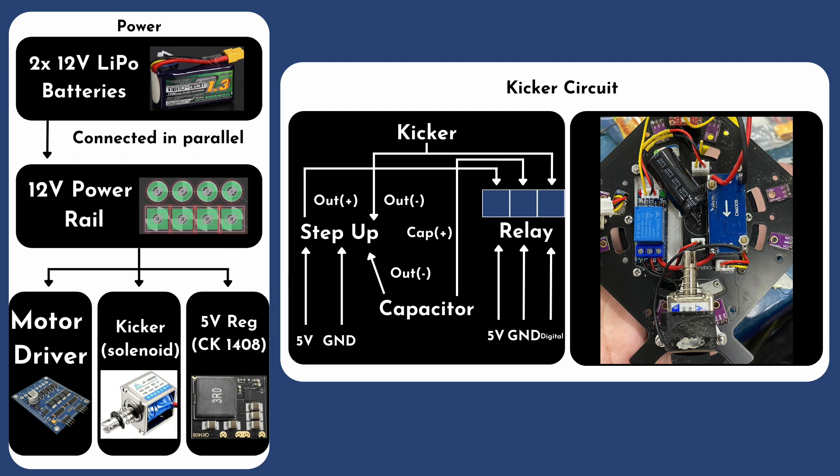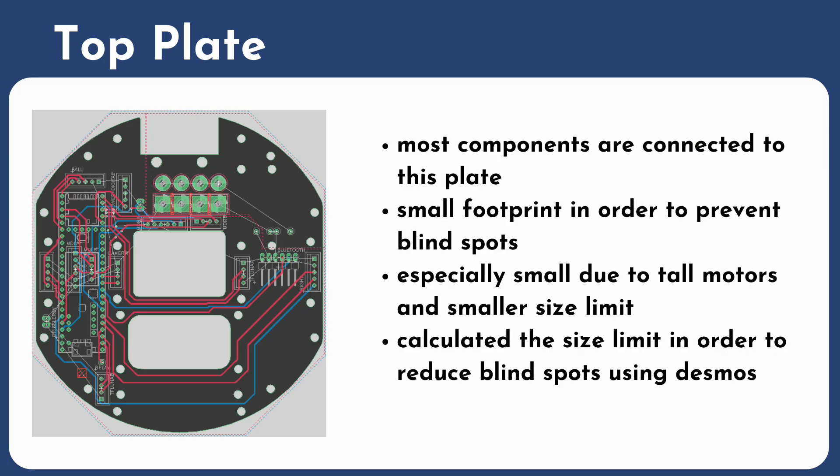The slide after that will be talking about our top plate. Most of our components are connected to this plate since the TNZ is on it. It has a really small footprint in order to prevent blind spots due to the tall motors and the smaller size limit this year. We had calculated the size limit in order to reduce the blind spots using Desmos. One thing that could be improved about this top plate is the placement of the components on this plate.